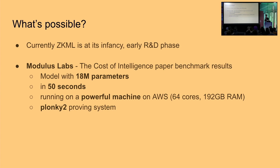My friends from Modulus Labs recently released a paper called 'The Cost of Intelligence' where they tried to benchmark different proving systems against different sized models. From their paper: you're able to prove a model of about 18 million parameters in about 50 seconds running on a powerful machine on AWS — 64 cores and 192 gigs of RAM. For that specific benchmark, they used the Plonky2 proving system built by the Polygon Zero team.